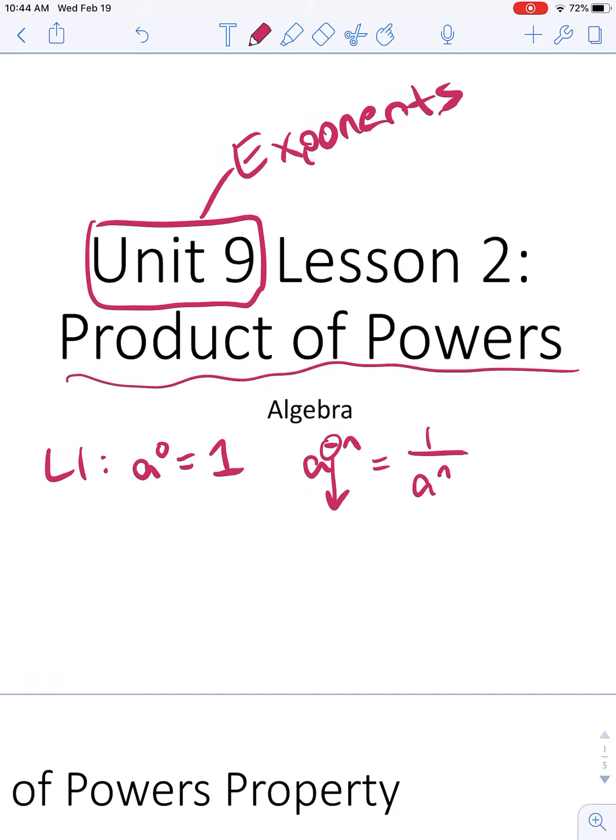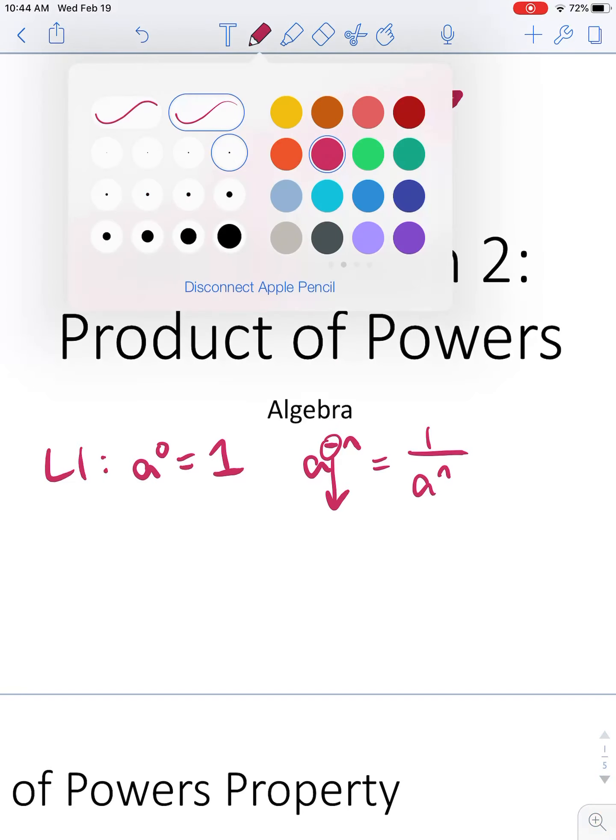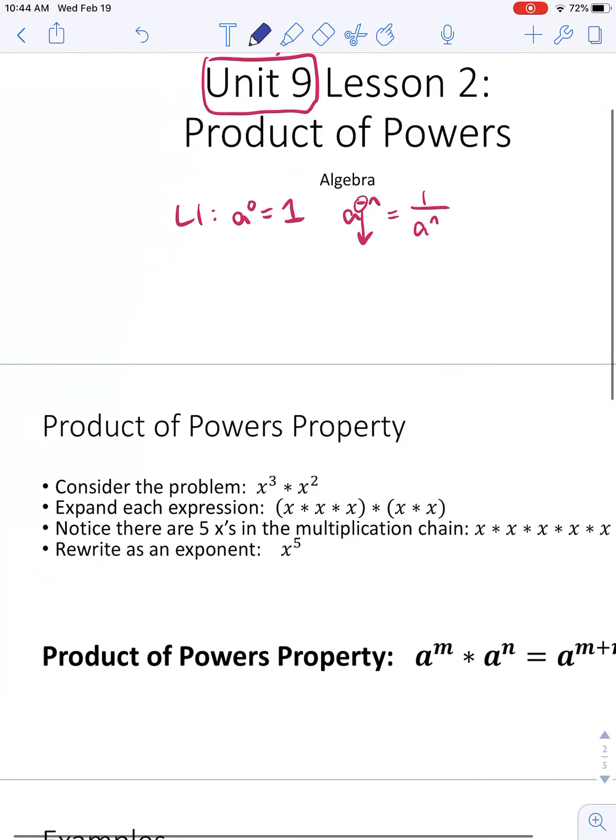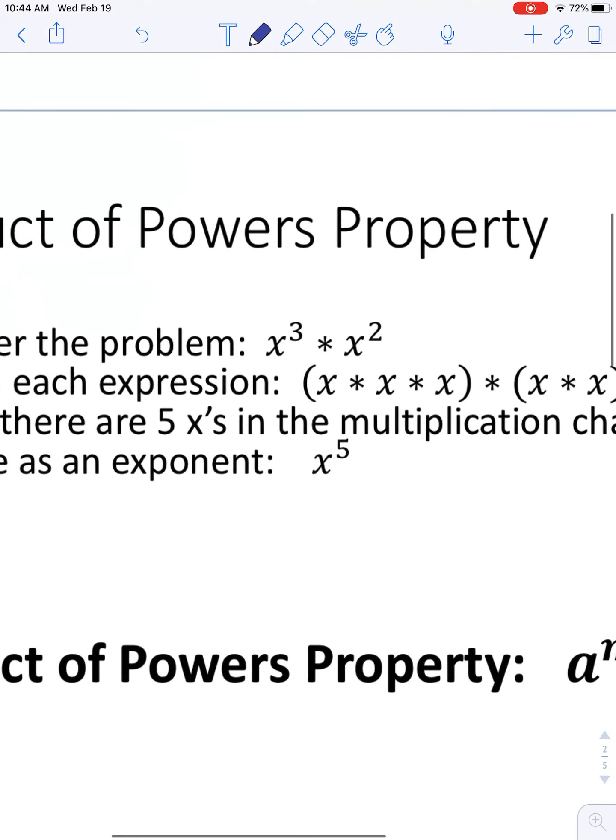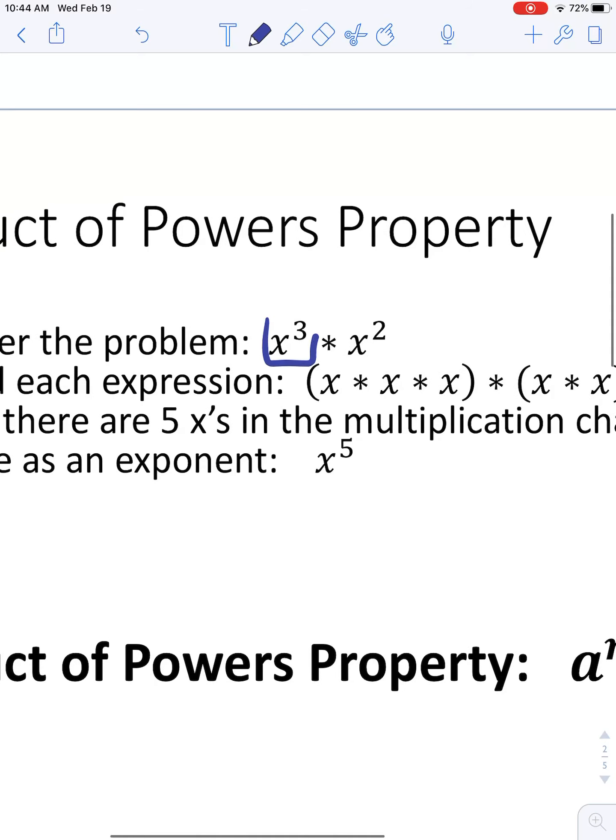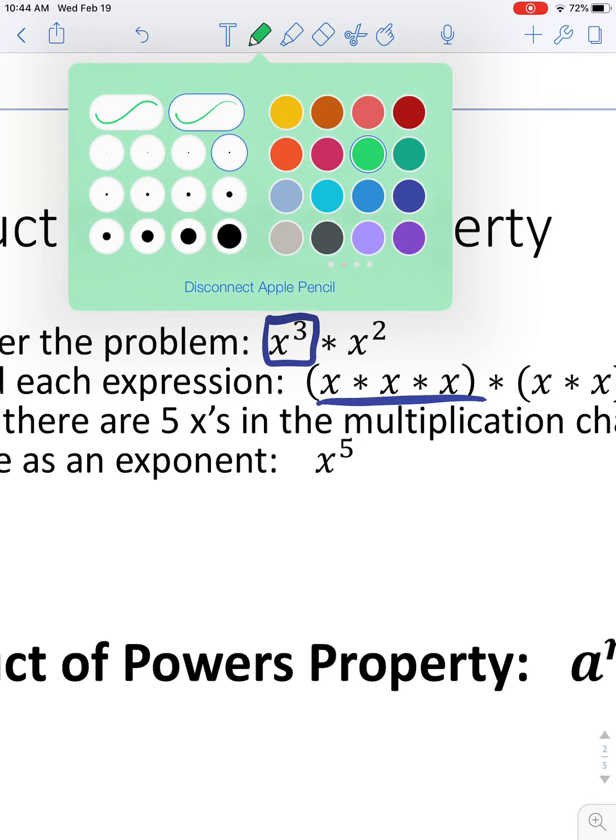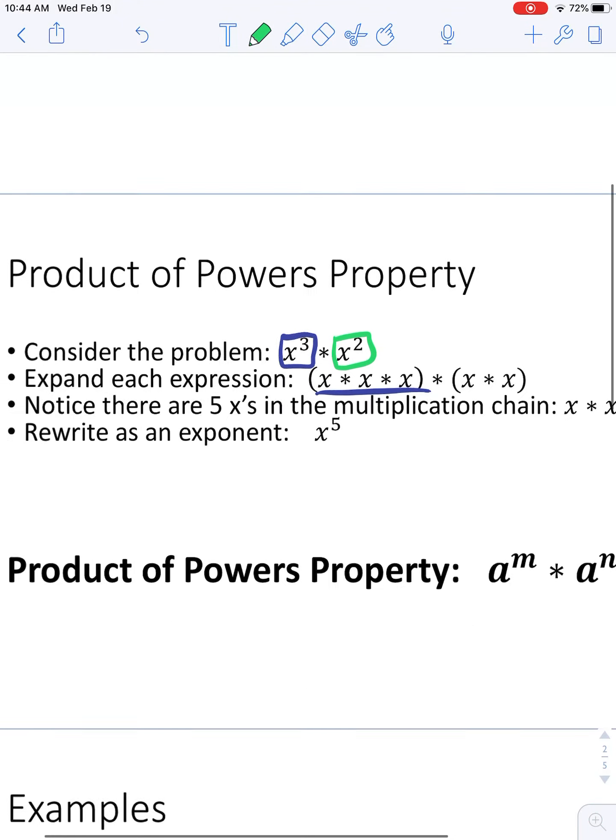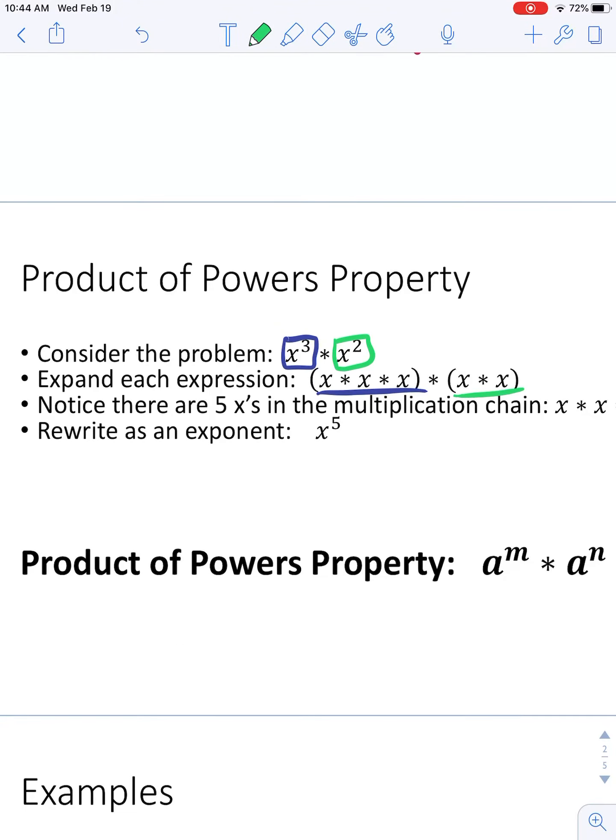Today, we're going to learn a new property called the product of powers. So the product of powers property talks about taking two multiplication chains and multiplying them together. Now, it doesn't look like a multiplication chain when you get it, because it's going to be written in exponent form. But remember, x to the 3rd means 3 x's being multiplied together. x squared means 2 x's being multiplied together.